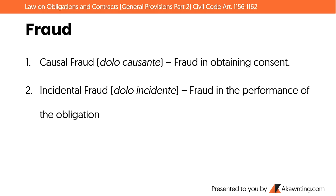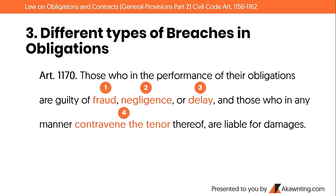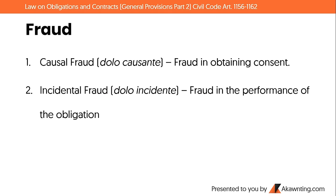Starting with fraud: there are two types — causal fraud (dolo causante), which is fraud employed in obtaining consent, and incidental fraud (dolo incidente), which is fraud employed in the performance of the obligation. In the context of Article 1170 breaches, the fraud referred to is incidental fraud — dolo incidente. Causal fraud is discussed in the context of contracts.